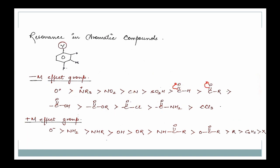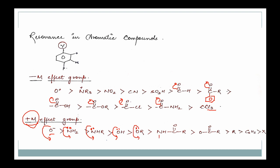Now let's talk about the plus M effect. Plus M effect groups are the ones that increase the electron density. For example, oxygen with a negative charge — O⁻ — because it has a negative charge and is already electron-rich, it will give its electrons to benzene. So these are the most electron-donating groups. Similarly, NH₂ has a lone pair — it will activate its lone pair into the benzene ring. The lone pair activates the ring. These are electron-donating groups. The key rule: always look at the directly attached atom — after a lone pair, it will definitely activate our benzene.